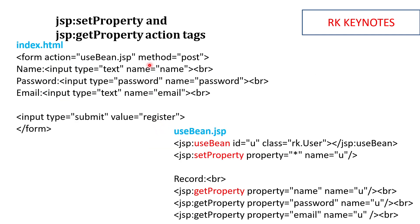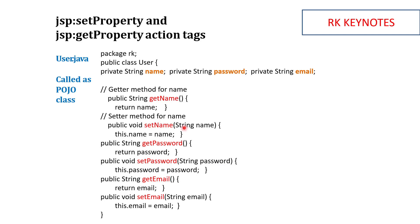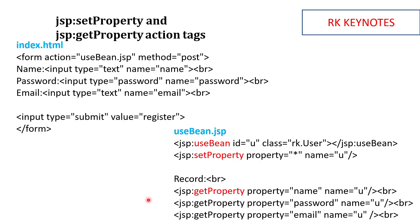For example, the input 'abc' goes to the setName method, where the name gets set. Then when jsp:getProperty is used, the getName method executes and the value is printed. The same process happens for the rest of the variables. Now I'm going to implement this in NetBeans.